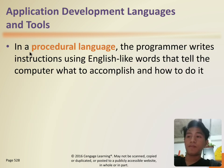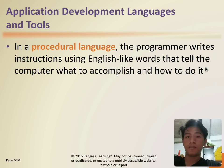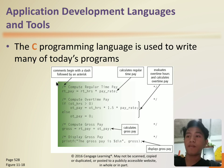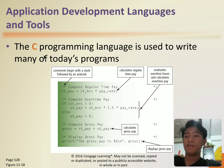In a procedural language, the programmer writes instructions using English words that tell the computer what to accomplish and how to do it. Programming language is used to write many of today's programs, and most programmers use this.